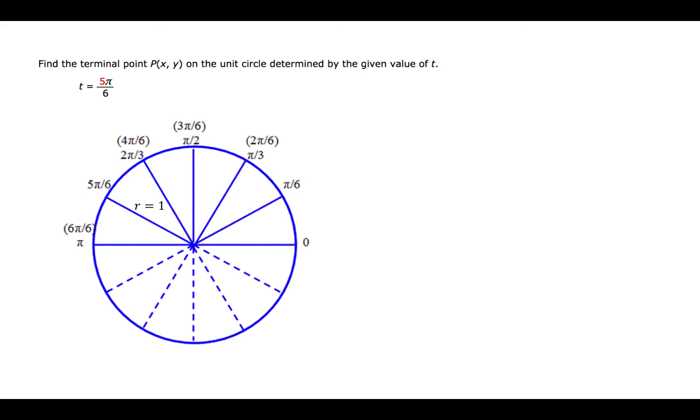We are to find the terminal point p(x, y) on the unit circle determined by the given value of t. t is 5π over 6.